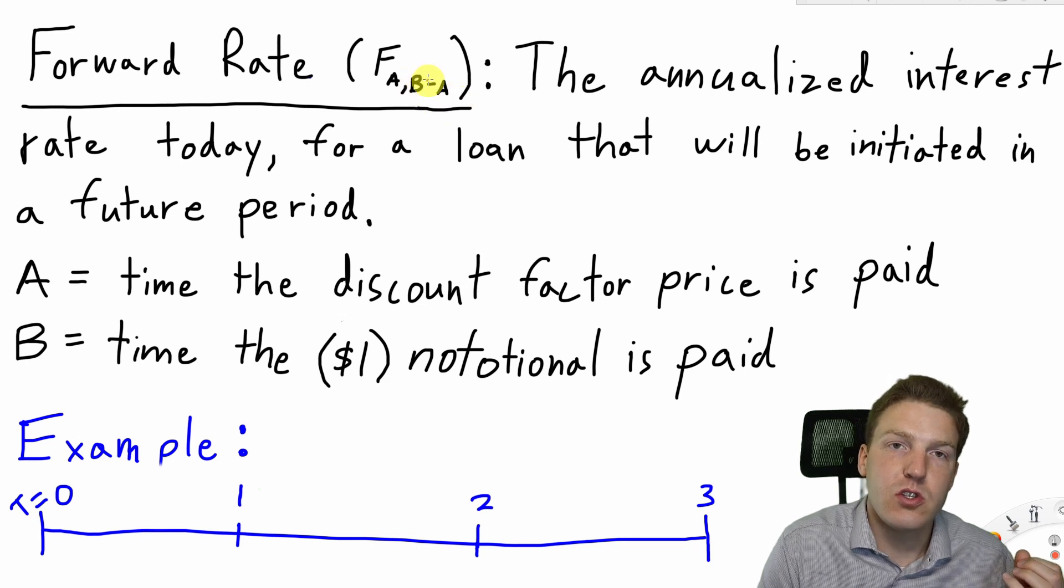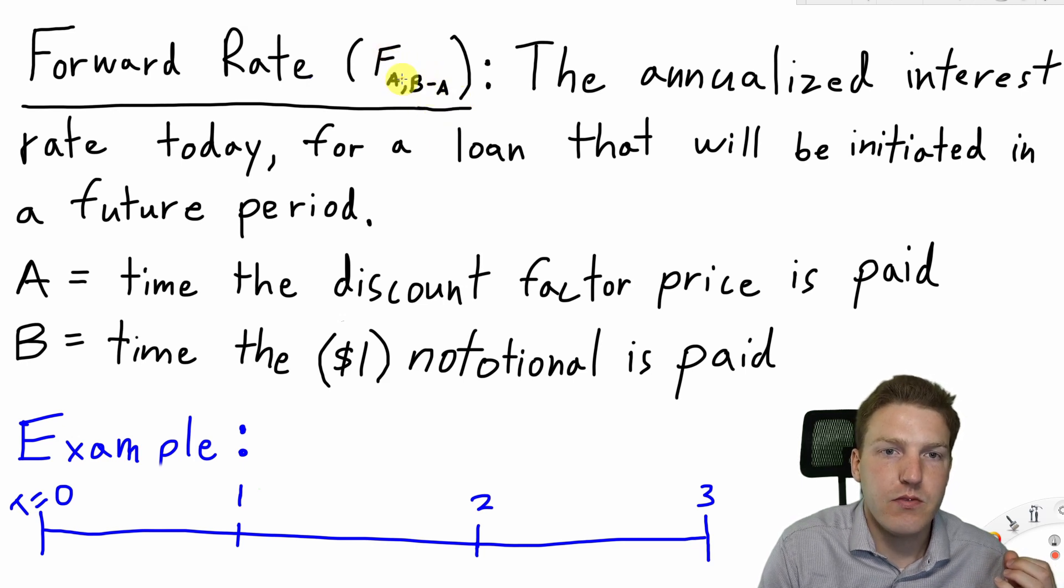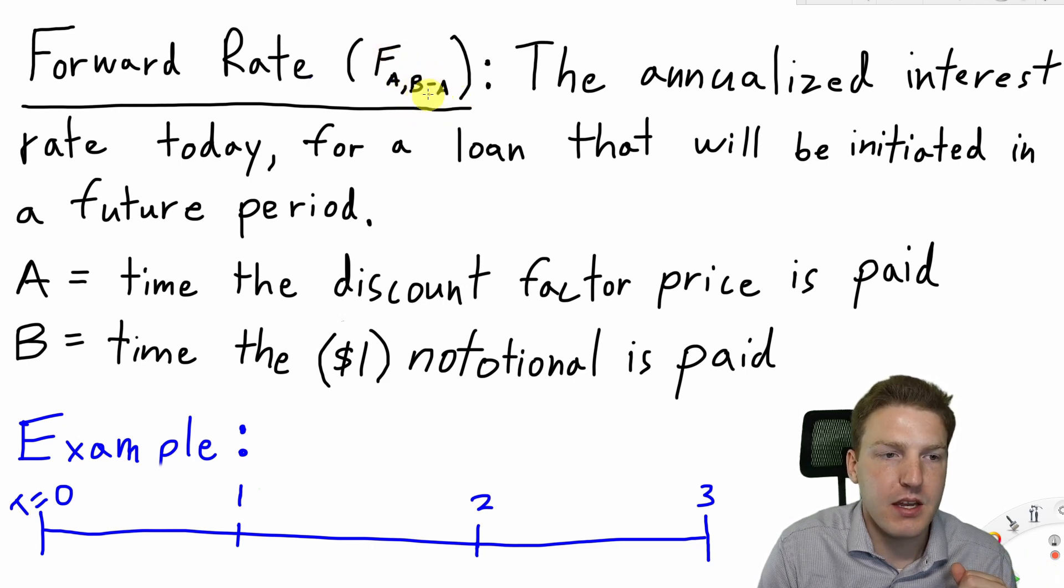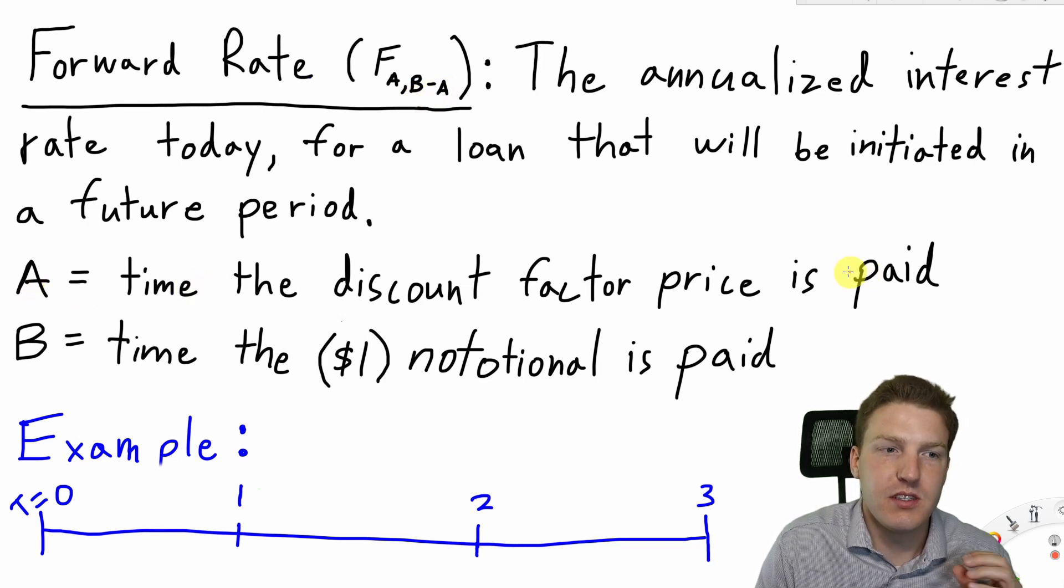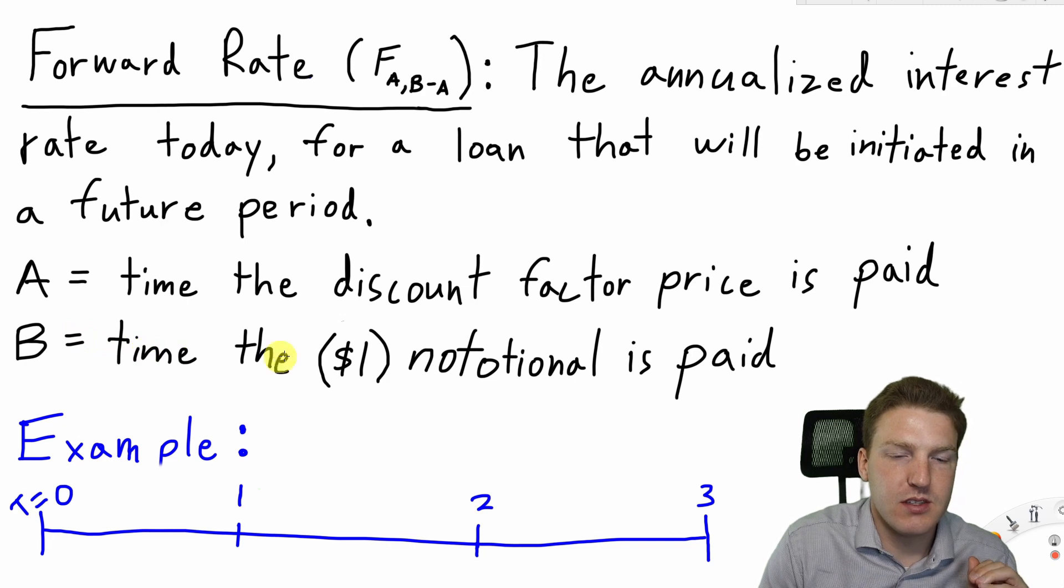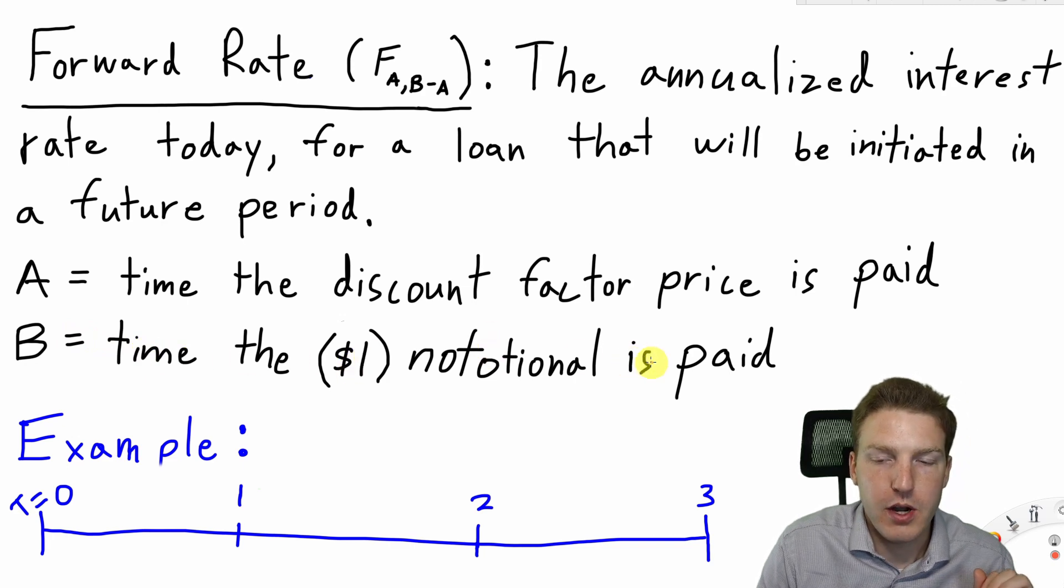In the CFA Institute textbooks, it's denoted as F A, B minus A. A represents the time the discount factor price is paid, and B represents the time the $1 notional price is paid.